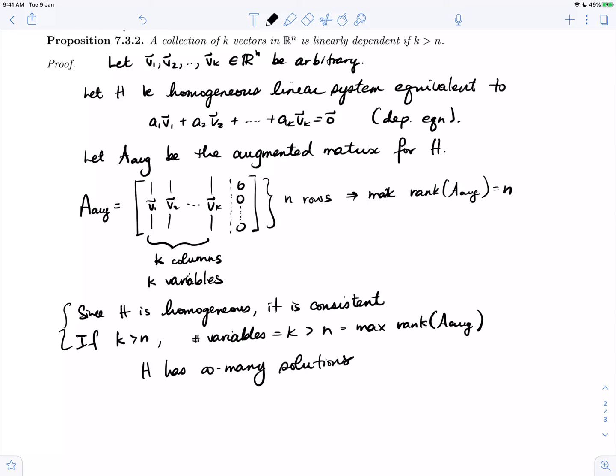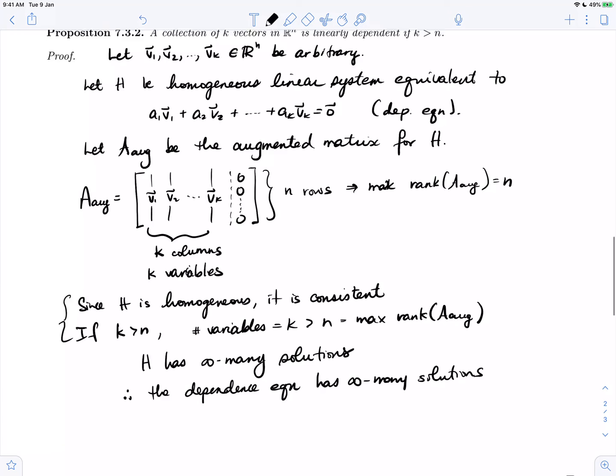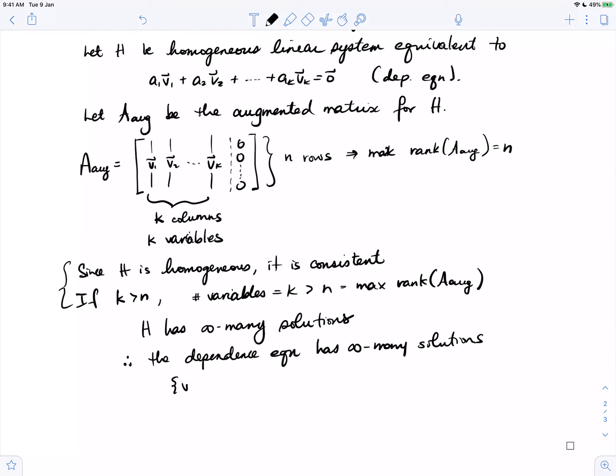H is equivalent to the dependence equation, therefore the dependence equation has infinitely many solutions, which means that our set v1 through vk is linearly dependent.